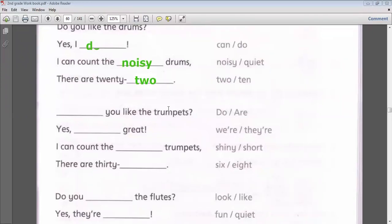Do you like the trumpets? Do you like or are you like? We have to say 'do you like' the trumpets. Yes we're great or they're great. We have to use 'they're great', so here we have to say 'they're great'.